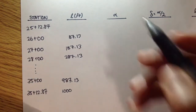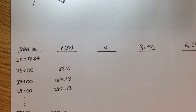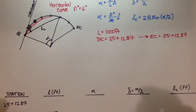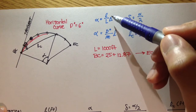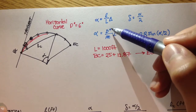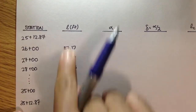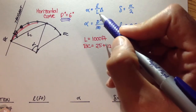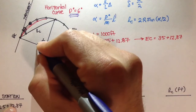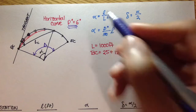Now let's figure out alpha. We have two formulas: alpha equals little l over L times delta, or alpha equals degree of curvature over 100 feet times little l. Since we're given the degree of curvature of 6 degrees, I'll use the second formula. If you knew the interior angle delta, you could use the first formula — both should give the same result.